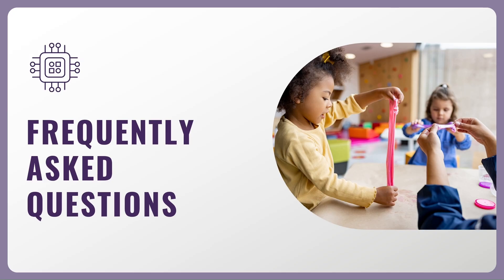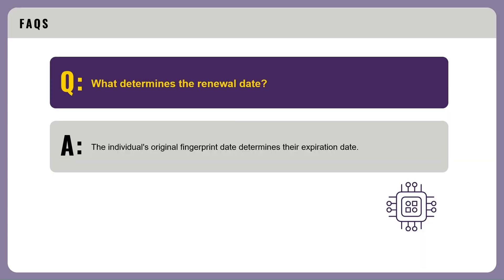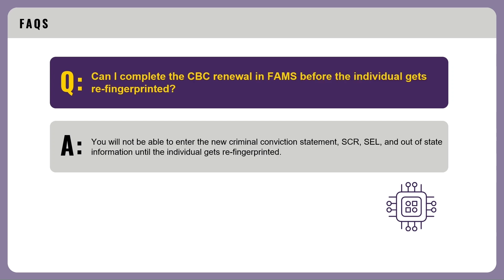Frequently Asked Questions. What determines the renewal date? The individual's original fingerprint date determines their expiration date. Can I complete the CBC renewal in FAMS before the individual gets re-fingerprinted? You will not be able to enter the new criminal conviction statement, SCR, SEL, and out-of-state information until the individual gets re-fingerprinted.